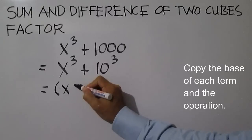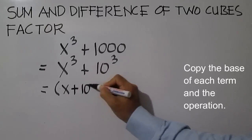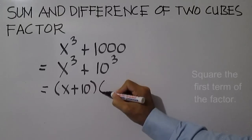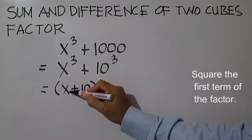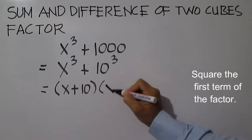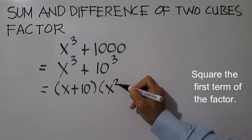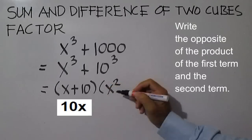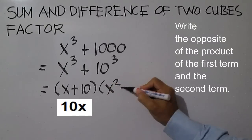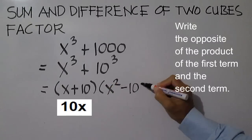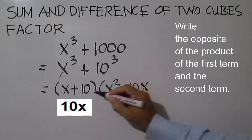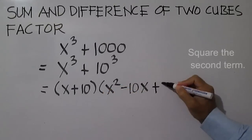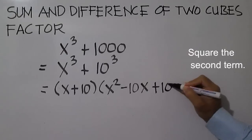Copy the base of each term and the operation, then using this factor, square the first term. Write the opposite of the product of the first and second term, then square the second term. 10 times 10 is 100.